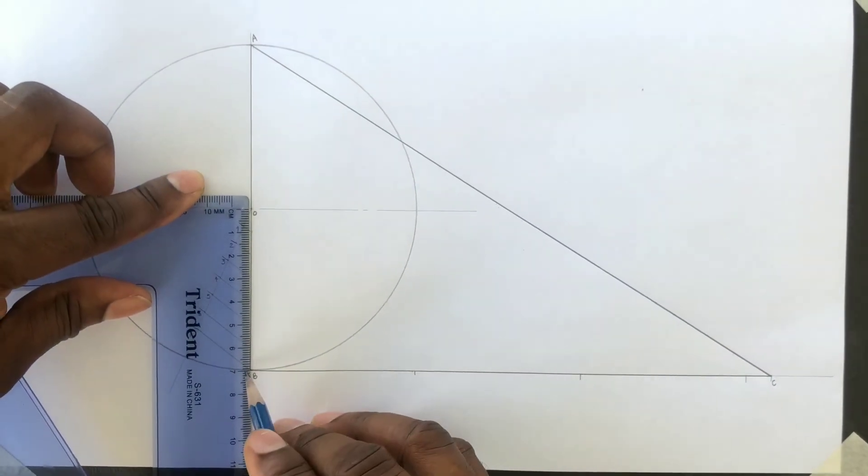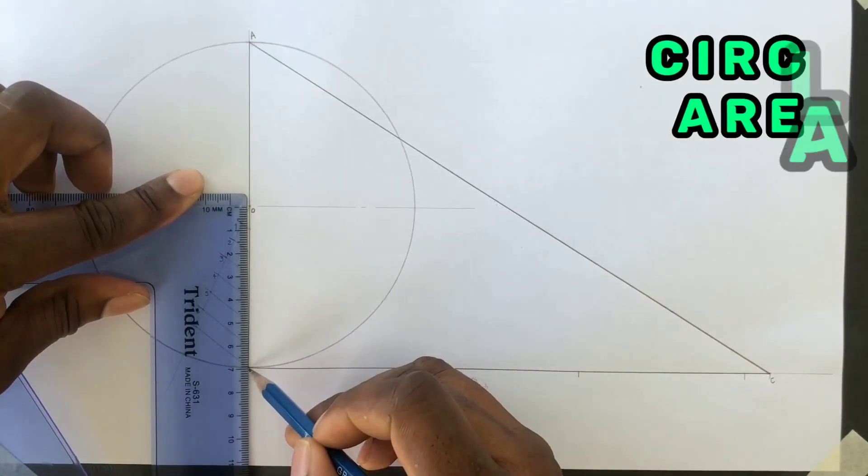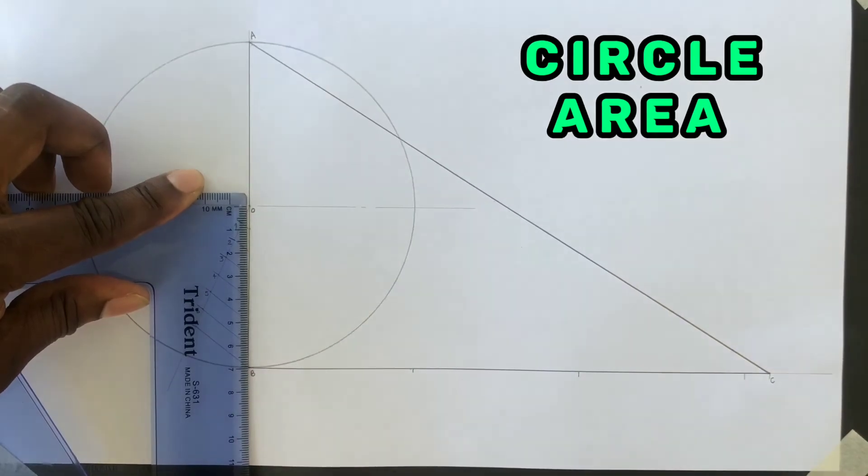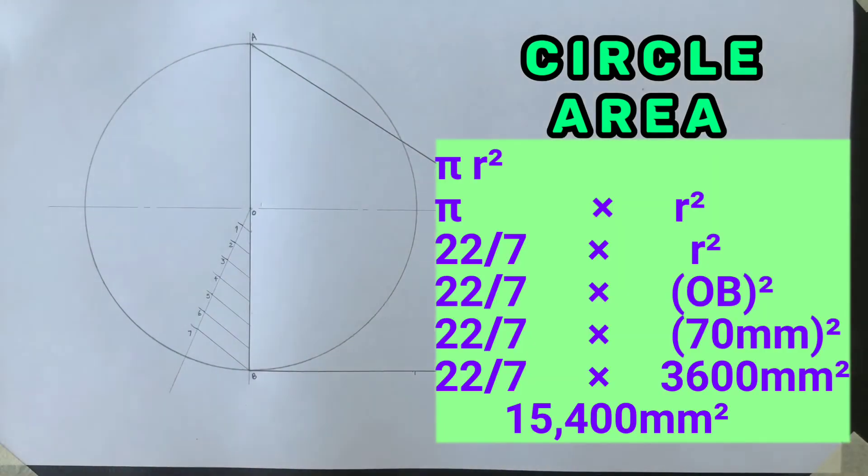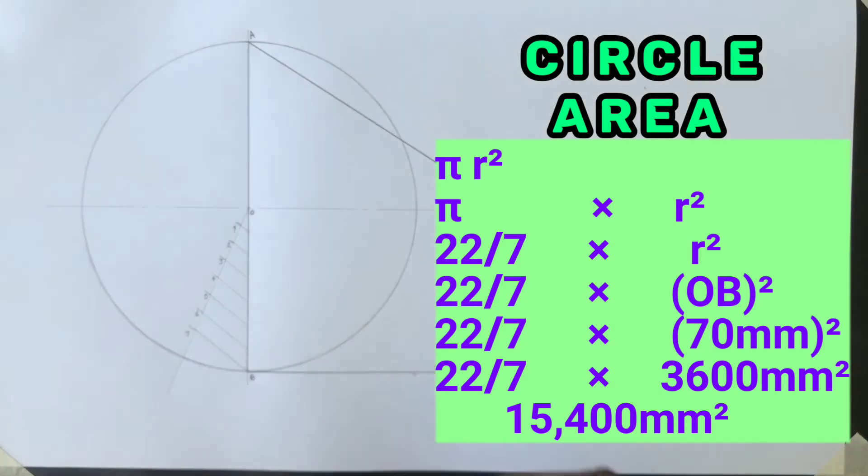If you use the formula pi R squared, you may calculate the area to be 15,400 millimeter square.